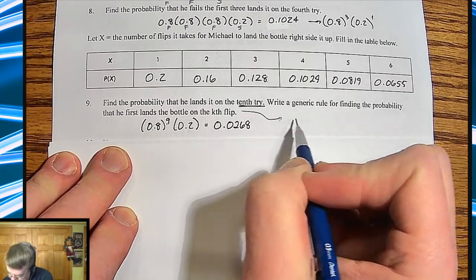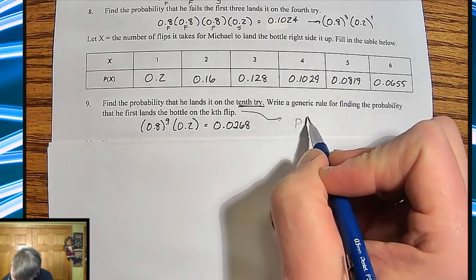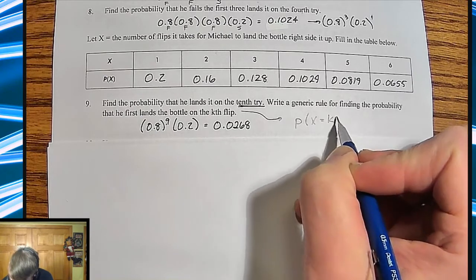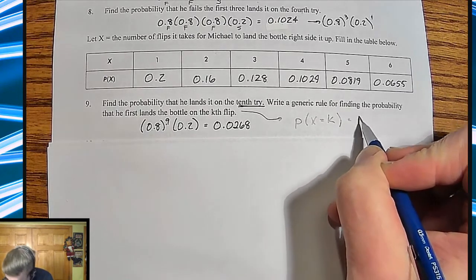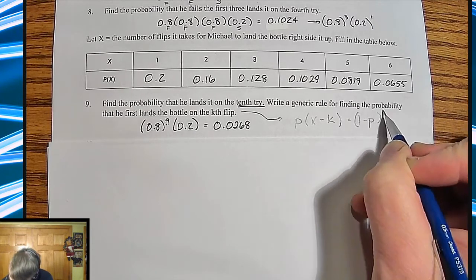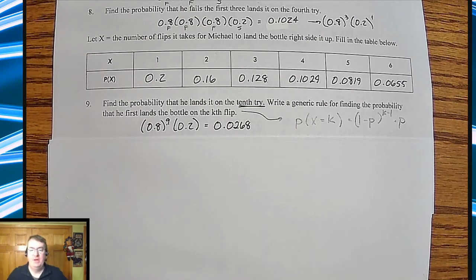And then for the K flip, you would end up going through and doing this. You would say, okay, I'm going to take probability that X is going to equal K. And that's going to be equal to one minus P. So that's your failure rate, right? Times K to the minus one power times just the probability.